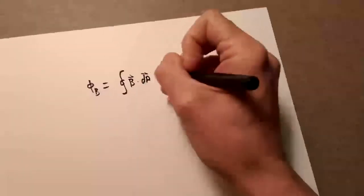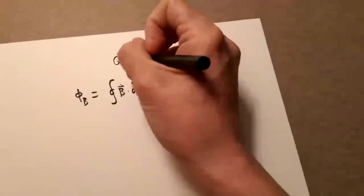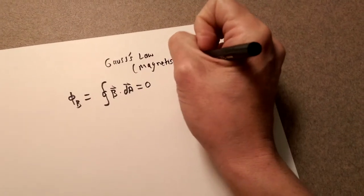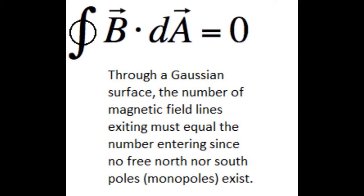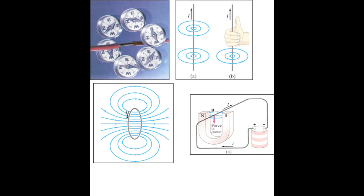Recall that we defined Gauss's Law for Magnetism as describing the observation that in nature no magnetic monopoles exist. So every magnetic field line that leaves a surface eventually comes back around and goes back into the surface, leaving a net magnetic flux through that surface of zero. We also discussed ways in which magnets and magnetic fields interact and how they are interrelated with electric currents and moving charges — the basis for why magnetism is extremely important in electricity and magnetism.